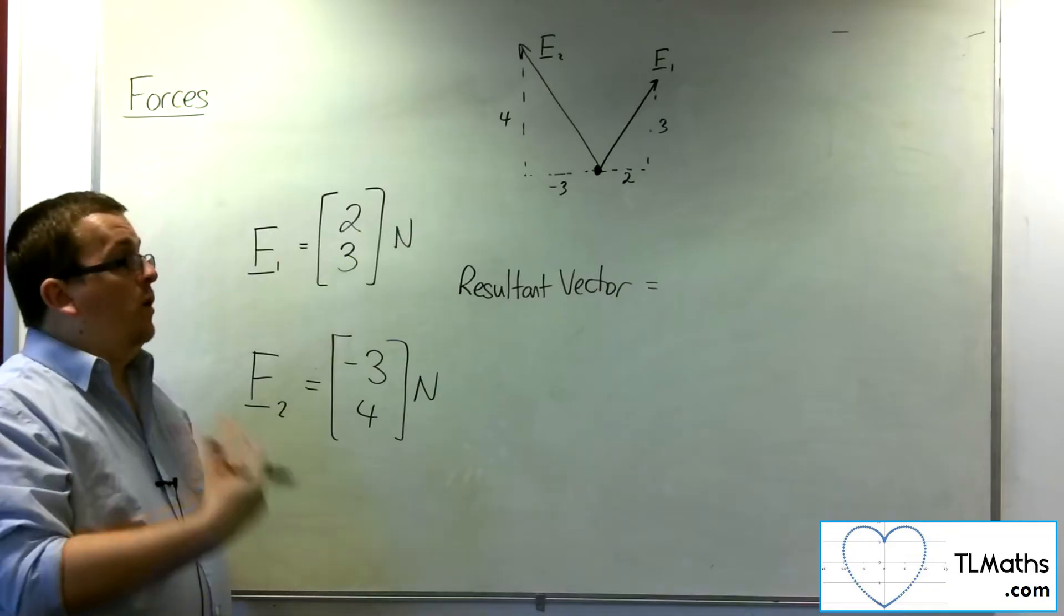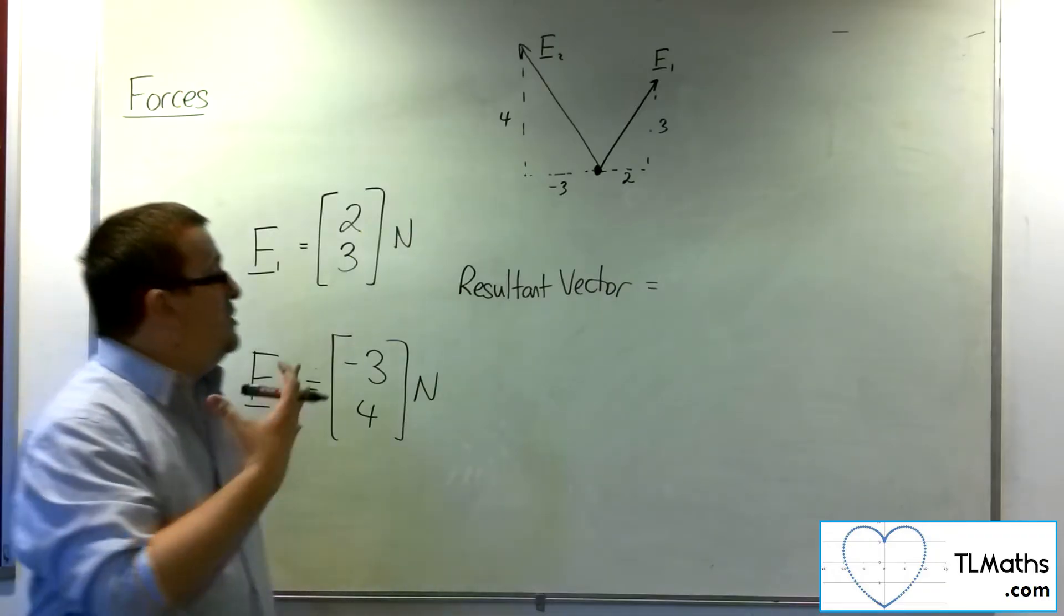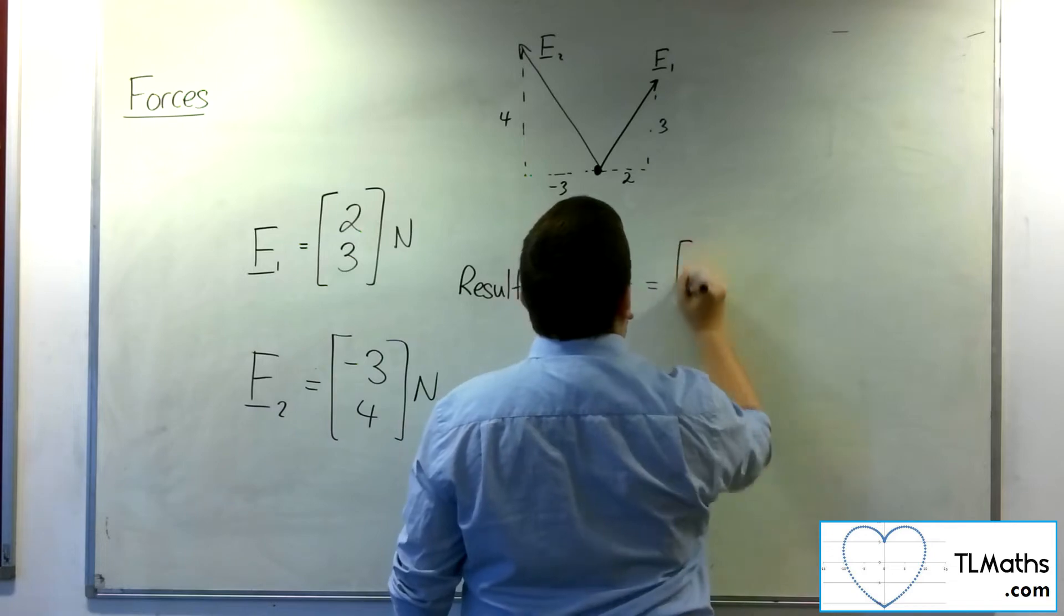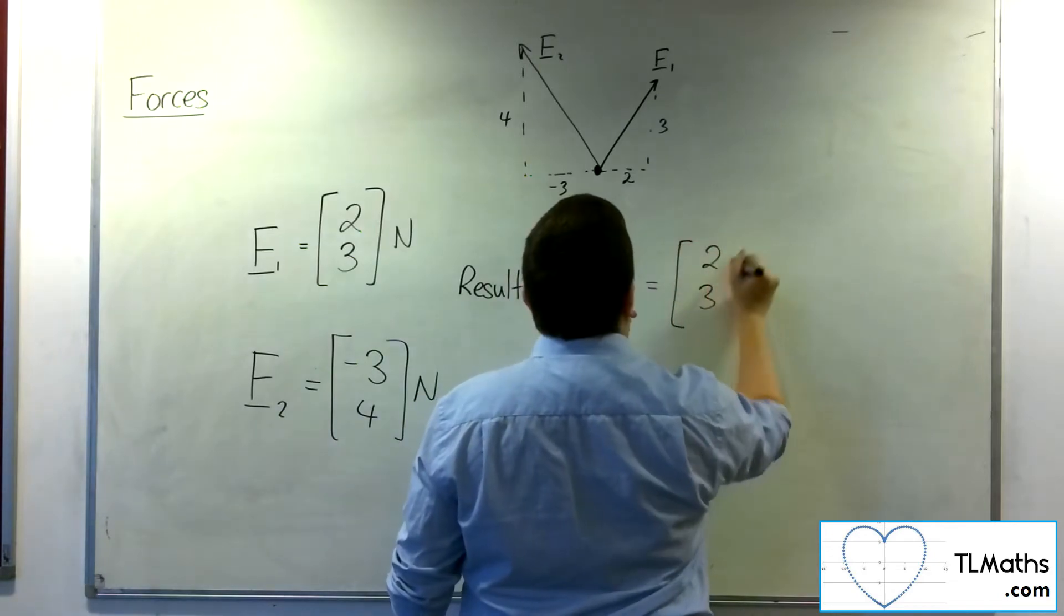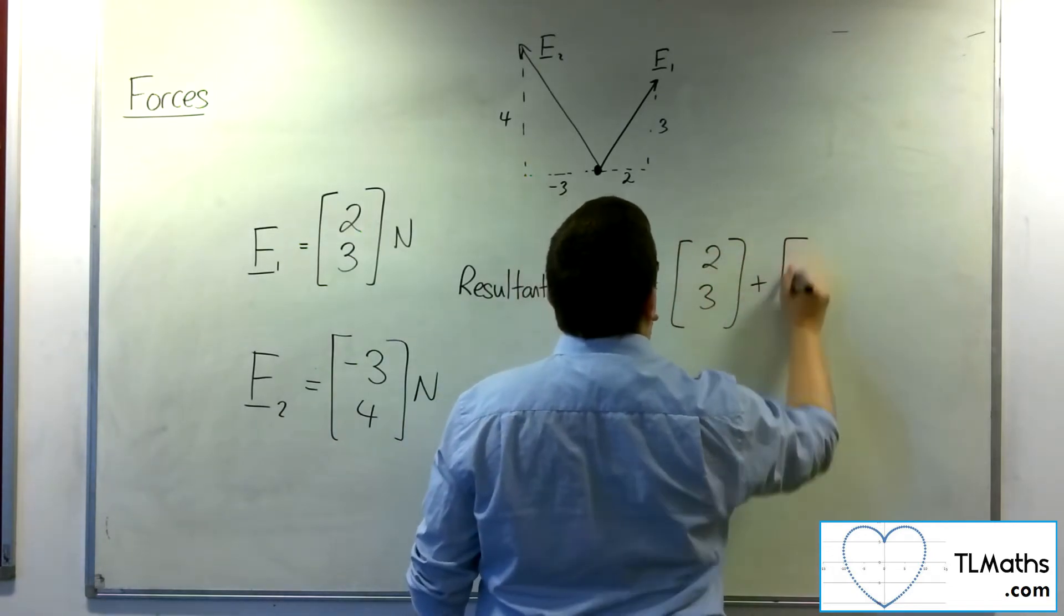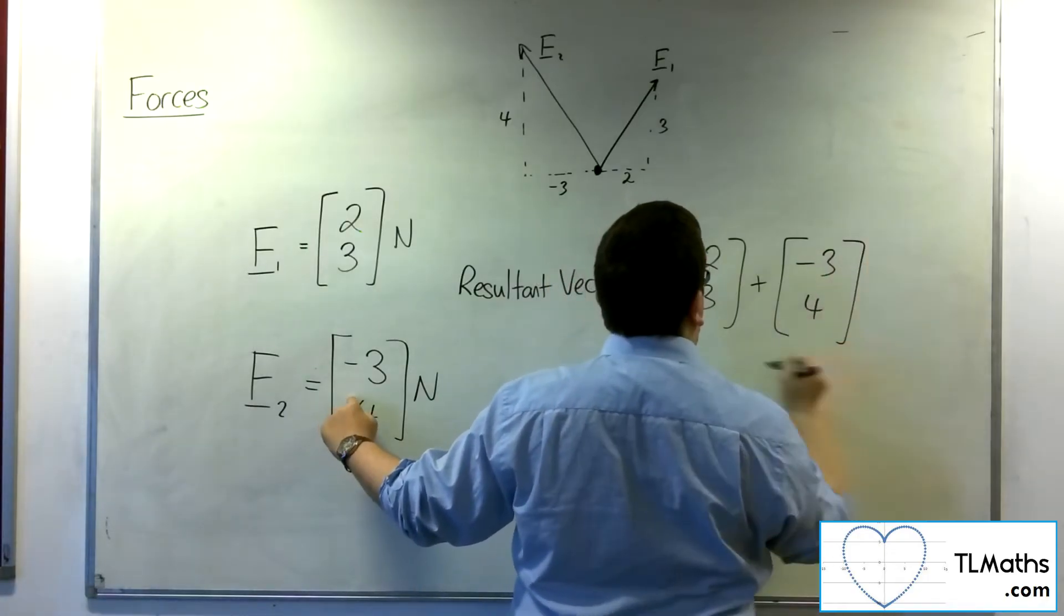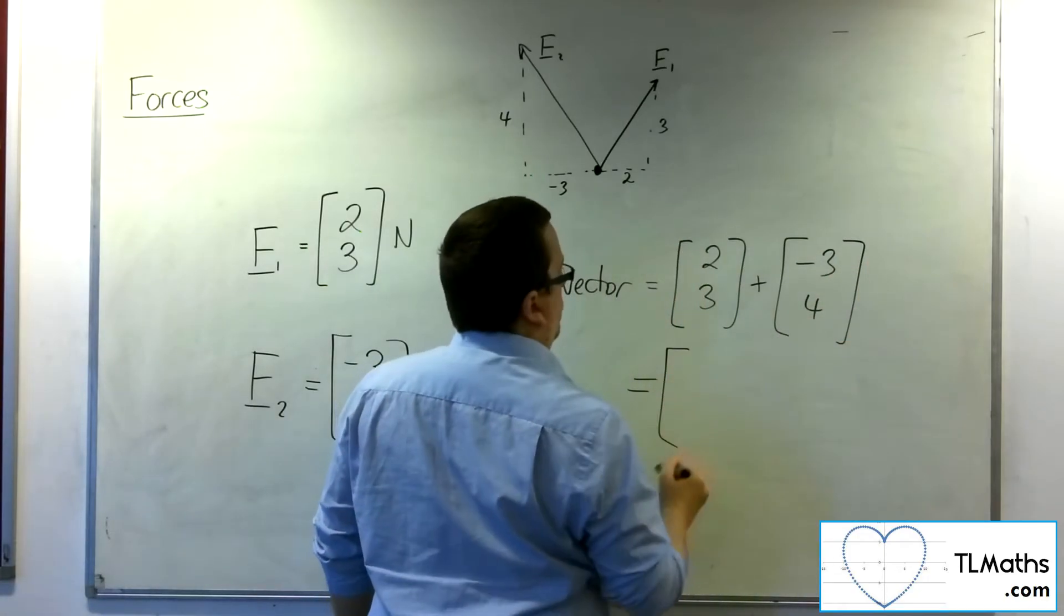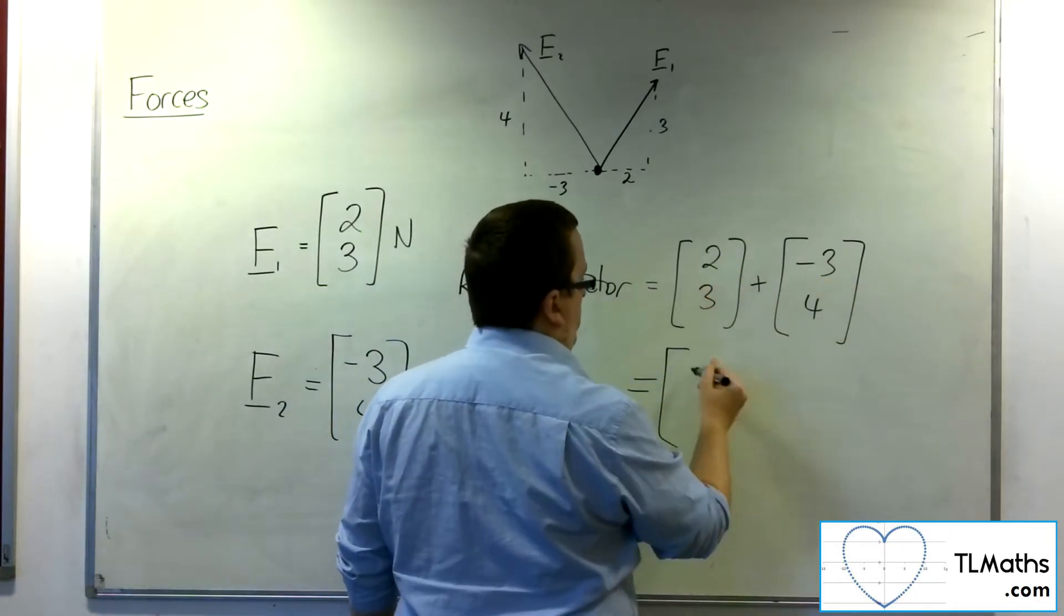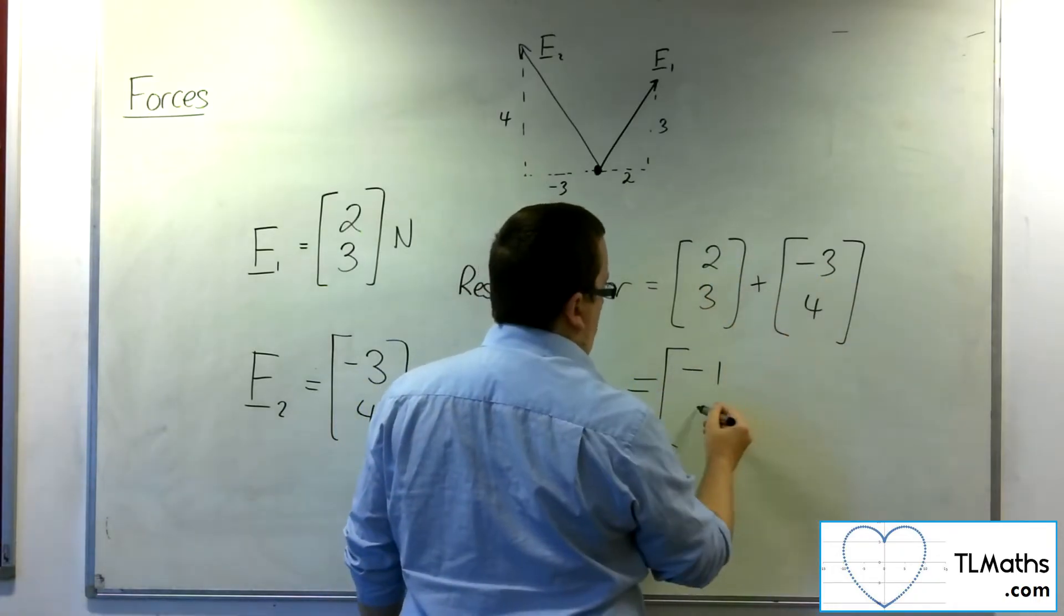So we can work out in which direction that boat's going by just adding the two vectors together. So the resultant force is just the sum of 2, 3 and minus 3, 4, which is, well, 2 take away 3 is minus 1, 3 plus 4 is 7.